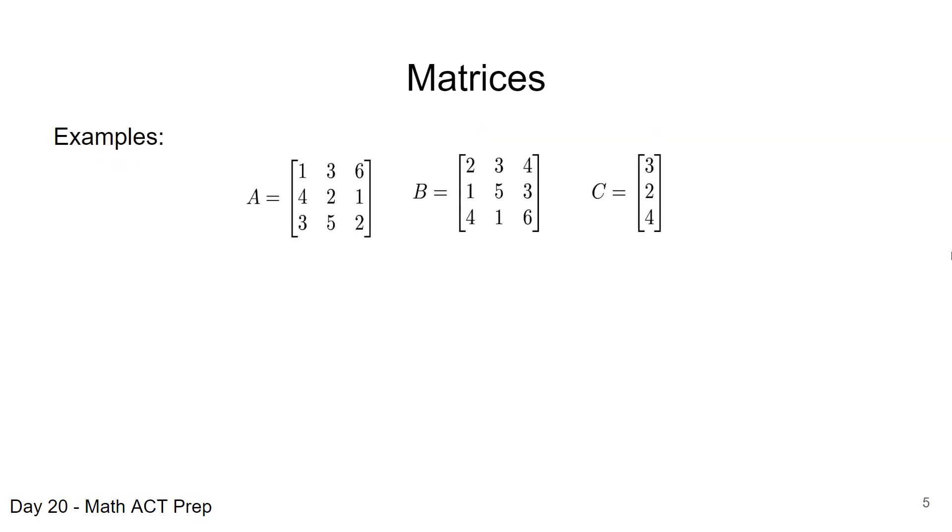Let's take a look at these examples. These are three different matrices, A, B, and C. Both A and B are three by three matrices. They have three rows and three columns. Rows go across, columns go up and down. The C matrix is a three by one. It has three rows and one column, three different elements in that particular matrix.